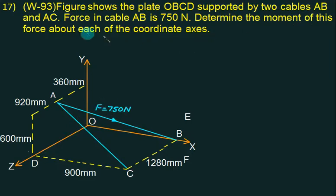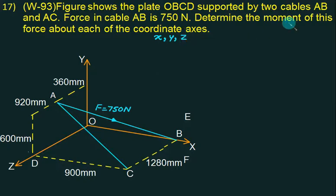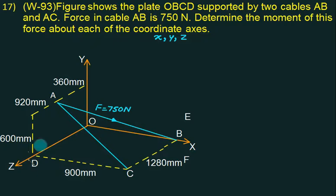Determine the moment of this force about each of the coordinate axes. We have three coordinate axes: X, Y, and Z. We want to find the moment about all these axes. So you have to select one point which is common to X, Y, and Z. The origin is the common point to all axes — it lies on the X axis, Y axis, as well as the Z axis.